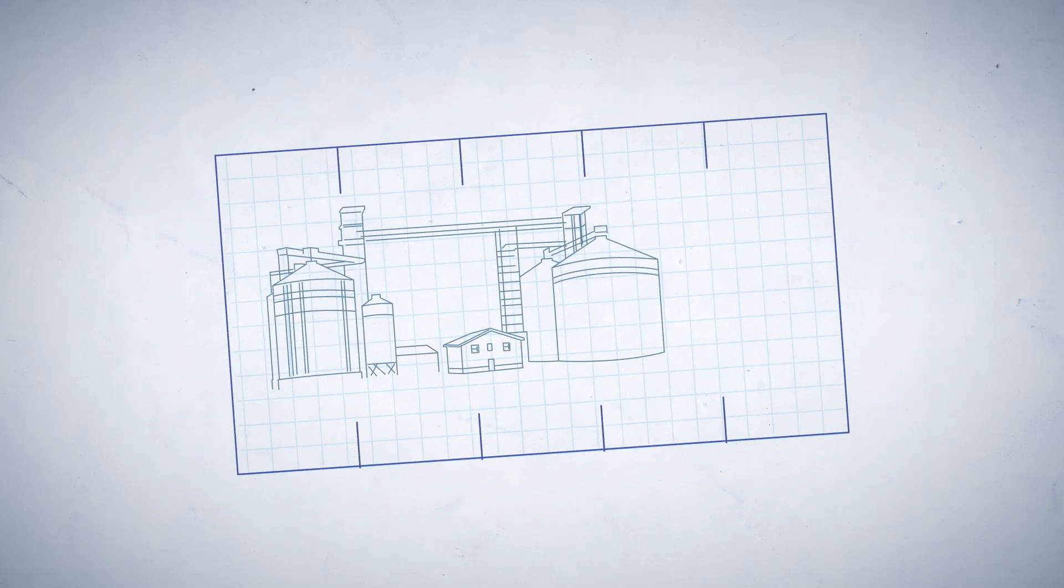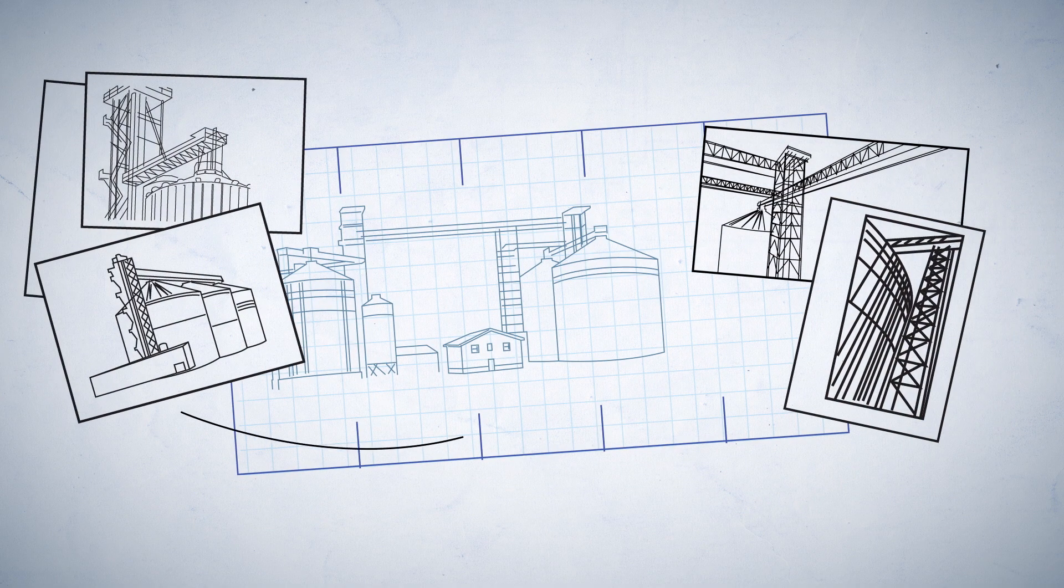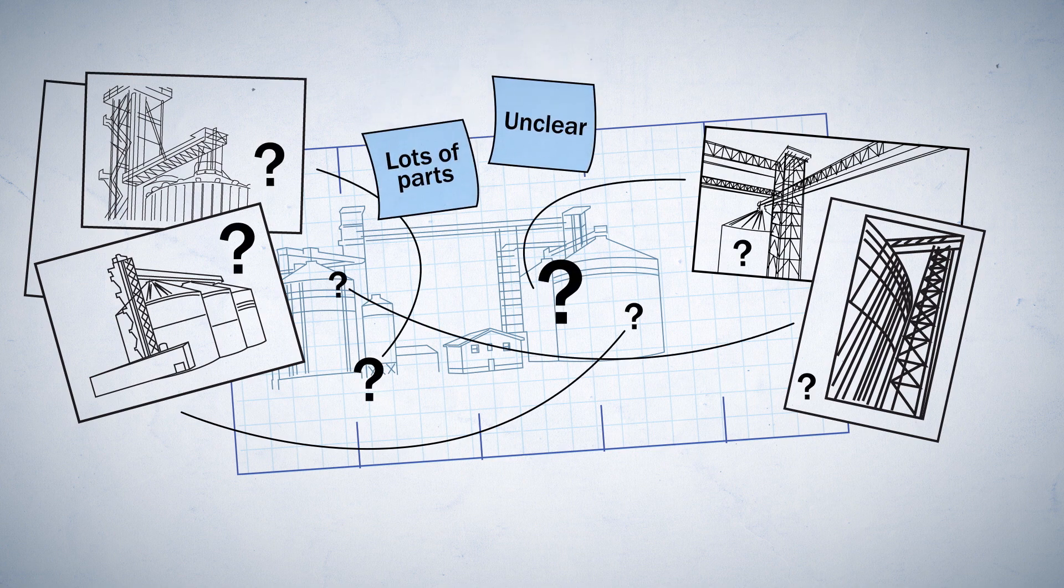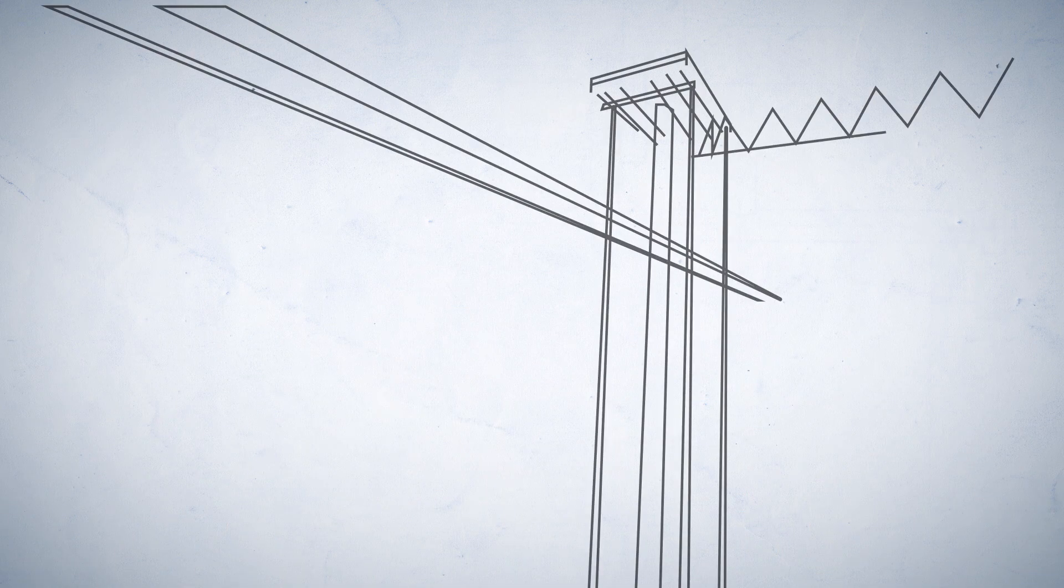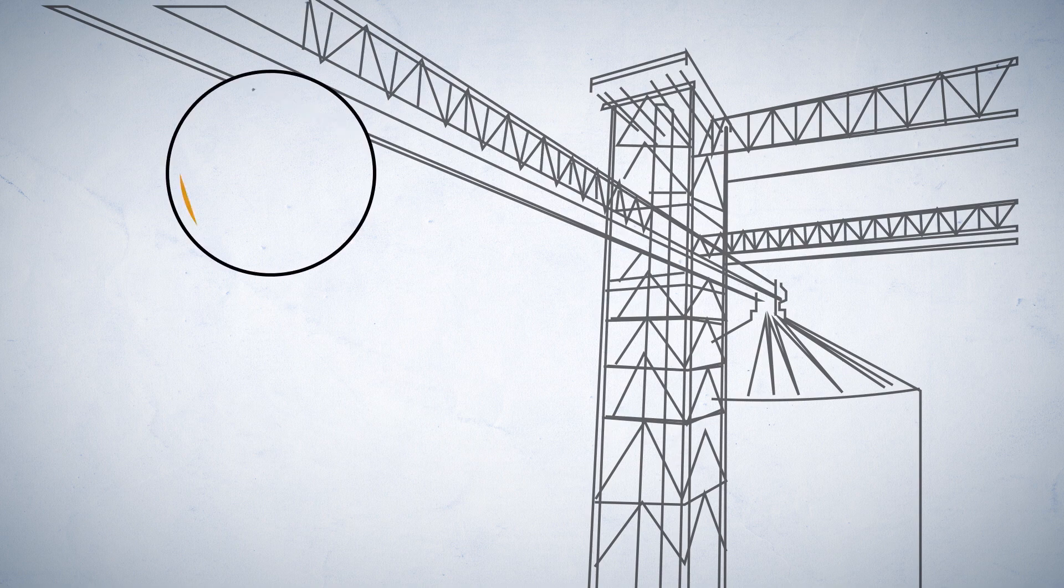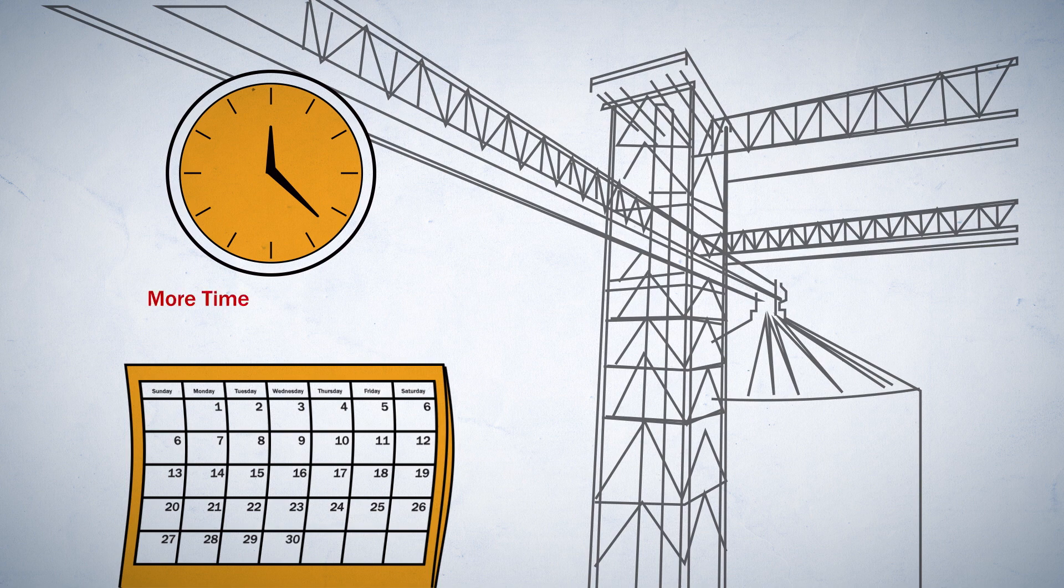We started by looking at how towers and catwalks are currently designed and assembled. It turns out they aren't as simple as they could be. There are lots of parts and it's not always clear how they fit together. As a result, you need an experienced team with plenty of time to do the job. That usually means significant time on the ground before they even start going up in the air. And when a job needs customization, that just means even more time and more cost.